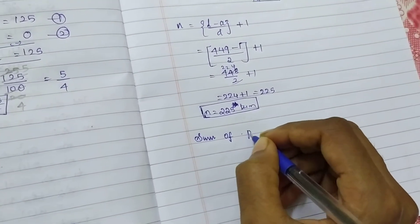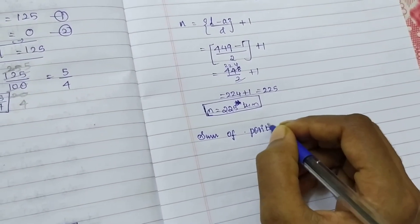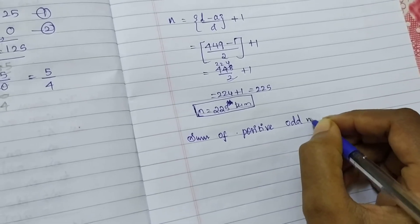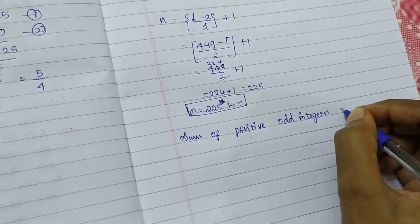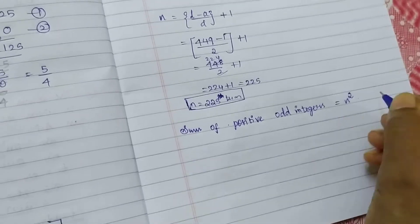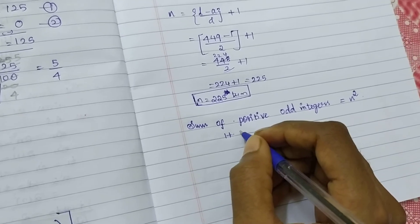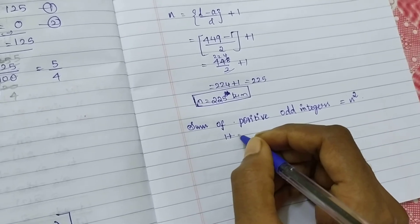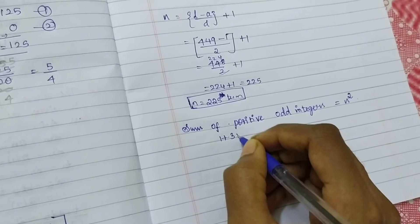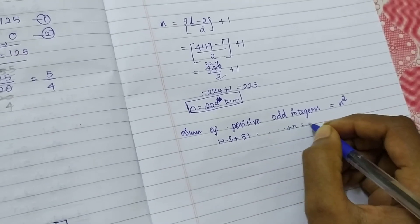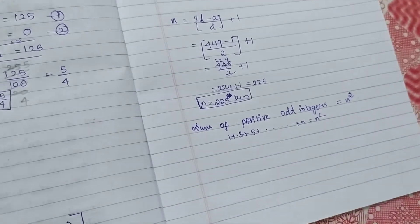Sum of positive odd integers is equal to N square. 1 plus 3 plus 5 plus... I think we will learn this formula in 2.9. So what is the formula? N square.